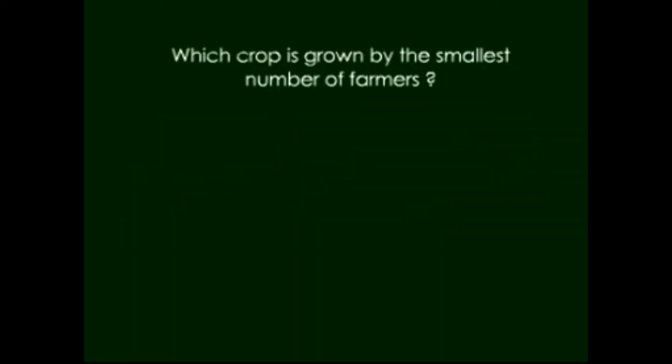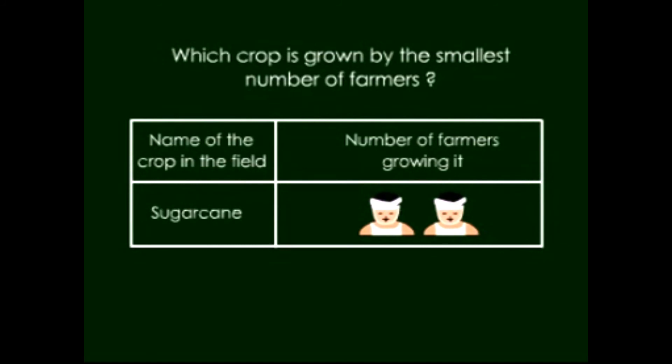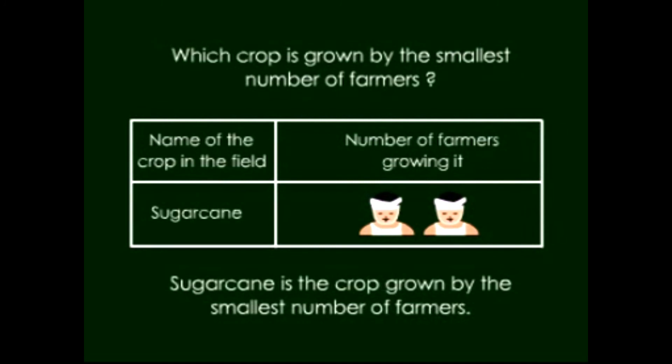Which crop is grown by the smallest number of farmers? Smallest number of farmers is two and they grow sugarcane. So sugarcane is the crop grown by the smallest number of farmers.